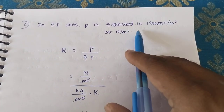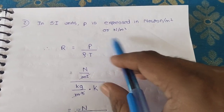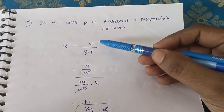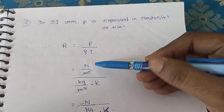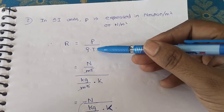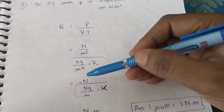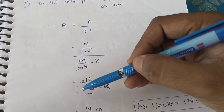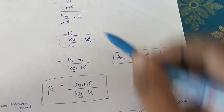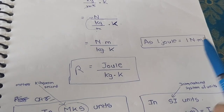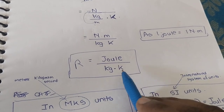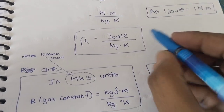In SI units, P is expressed in Newton per meter square. R equals P divided by density into temperature, where P is absolute pressure in Newton per meter square, density is in kg per meter cube, and temperature is in Kelvin. The meter square and meter cube cancel, giving Newton·meter per kg·degree Kelvin. Since one Joule equals one Newton·meter, R is obtained as Joule per kg·degree Kelvin.